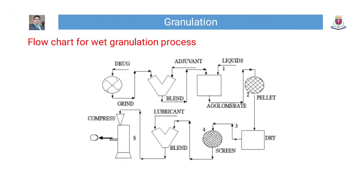This figure indicates the flow chart for the wet granulation process. All the steps which we have learnt are presented diagrammatically: grinding, blending, agglomeration, drying, screening, lubrication, and compression of granules, finally resulting in tablets.